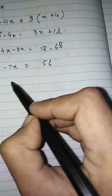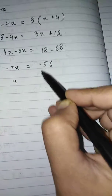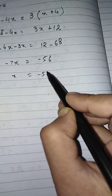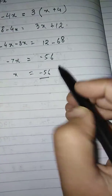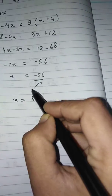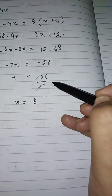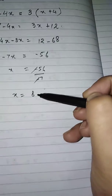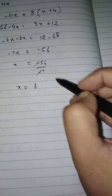68 minus 12 gives 56. So we get x equals 56 divided by 7, since 7 is multiplying x and when it moves to the other side it divides. The negatives cancel each other, and 7 times 8 is 56. So the number is 8. This is your answer.